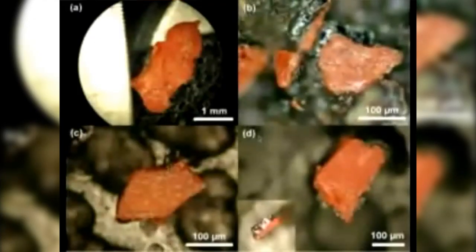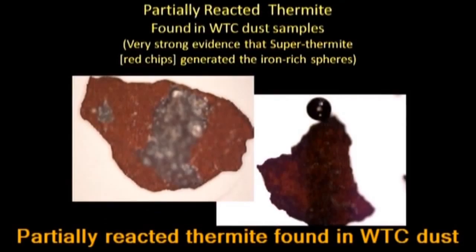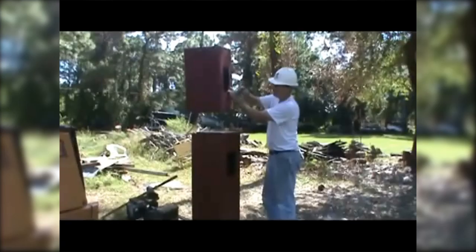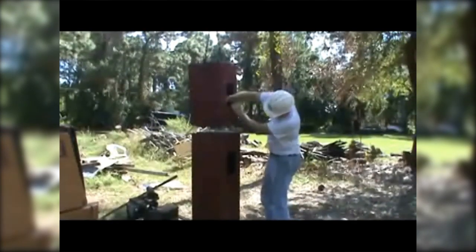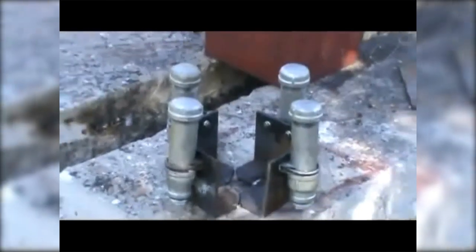Then an independent peer-reviewed report was published which found explosive red-gray chips throughout the dust, positively identified as nano-thermite, or super-thermite. Unlike conventional thermite, this is a very high-tech explosive and confirmed what independent scientists had been saying all along. It is more likely that any pre-weakening thermitic material was hidden inside the perimeter box columns. A replica of a segment of the WTC box columns was made up, and like the Trade Center ironworkers, the segments were bolted together. Two sets of bolt blasters were made, placing them in the access hole.